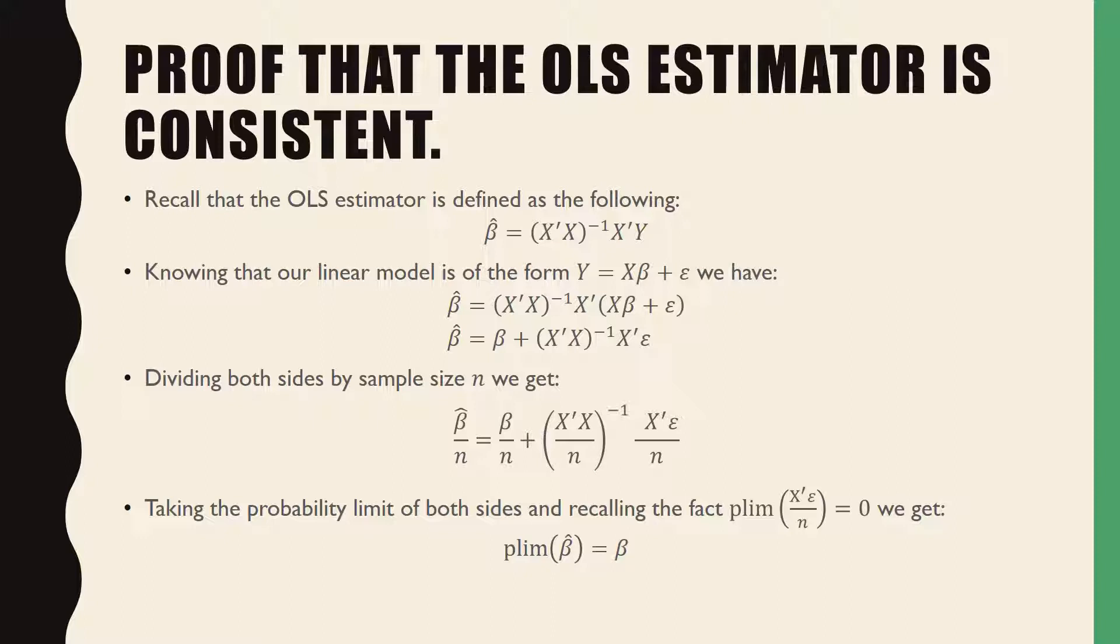Knowing that our linear model is of the form y = Xβ + ε, we substitute that into our estimator for β̂. We get (X'X)⁻¹X'(Xβ + ε). This reduces down to β̂ = β + (X'X)⁻¹X'ε.